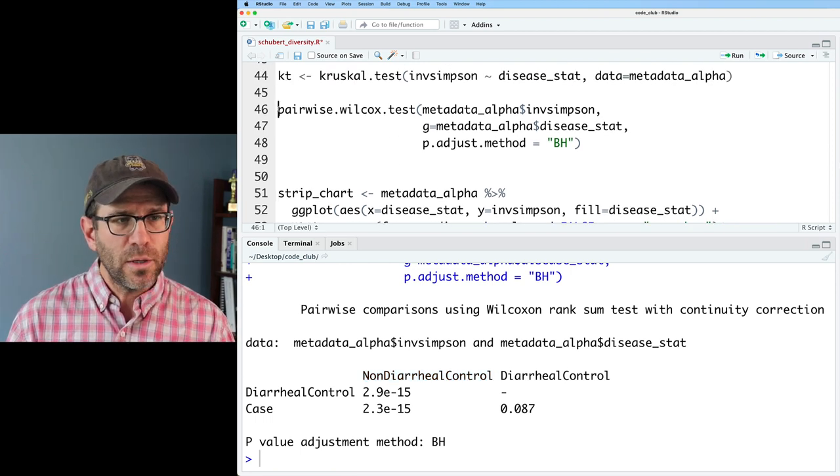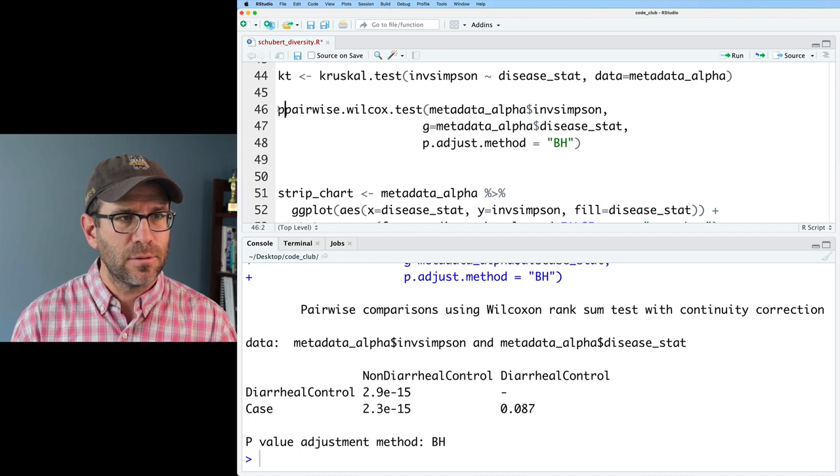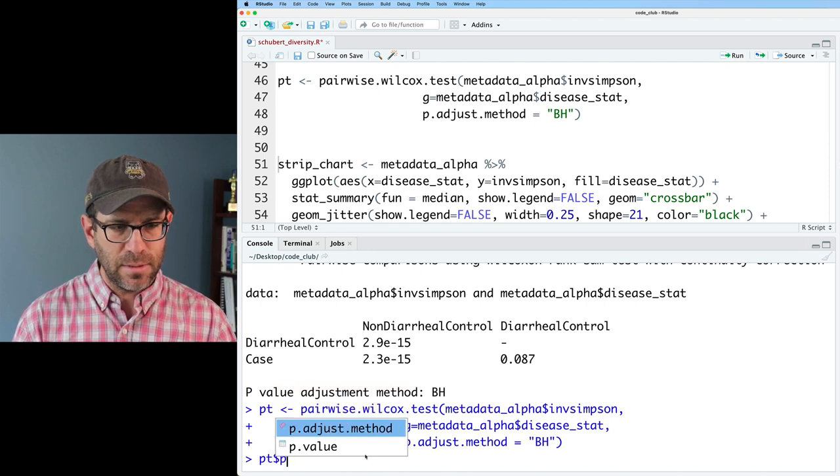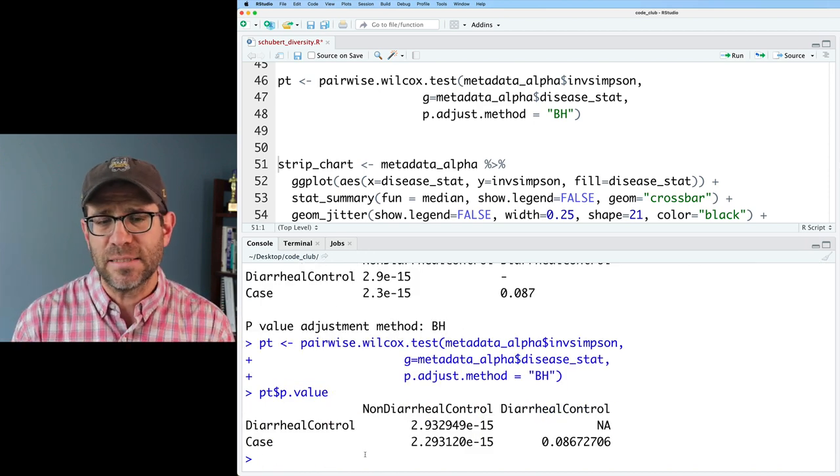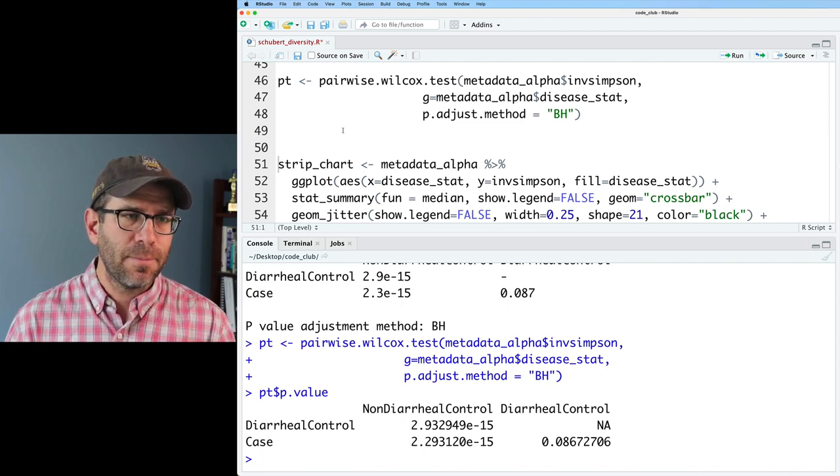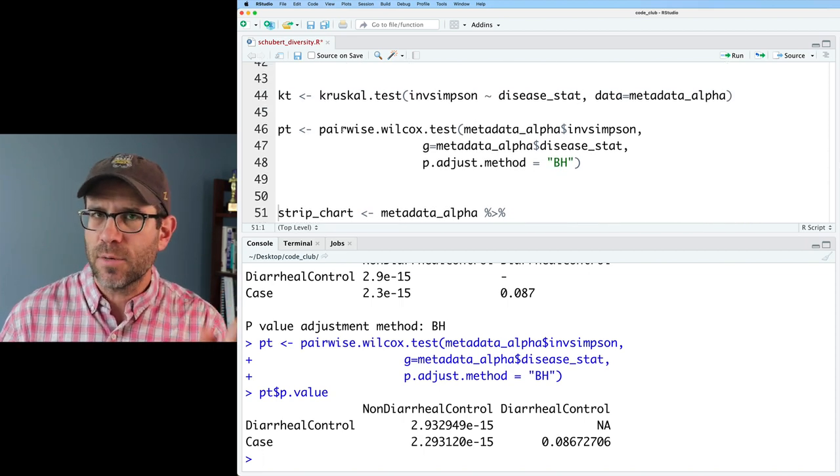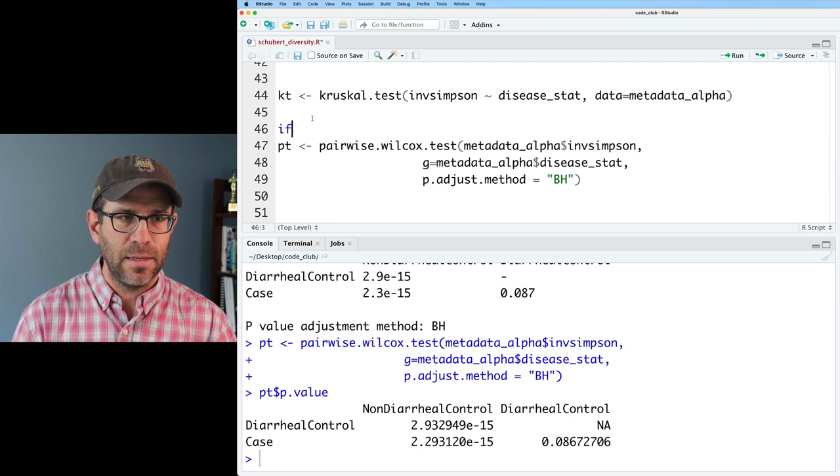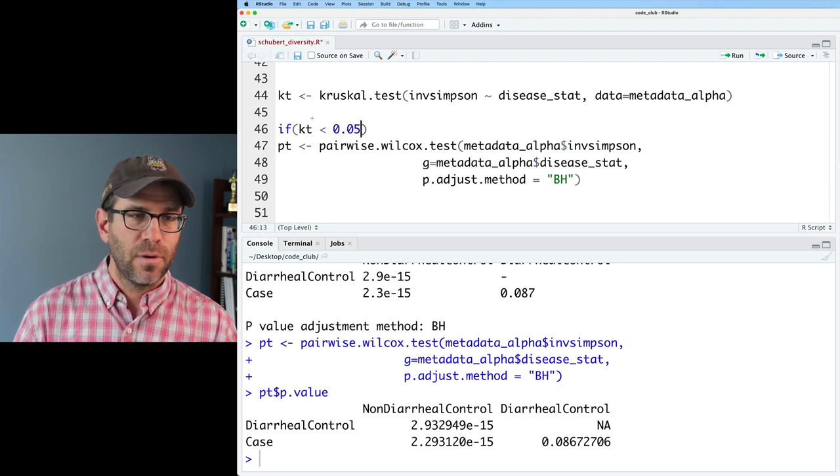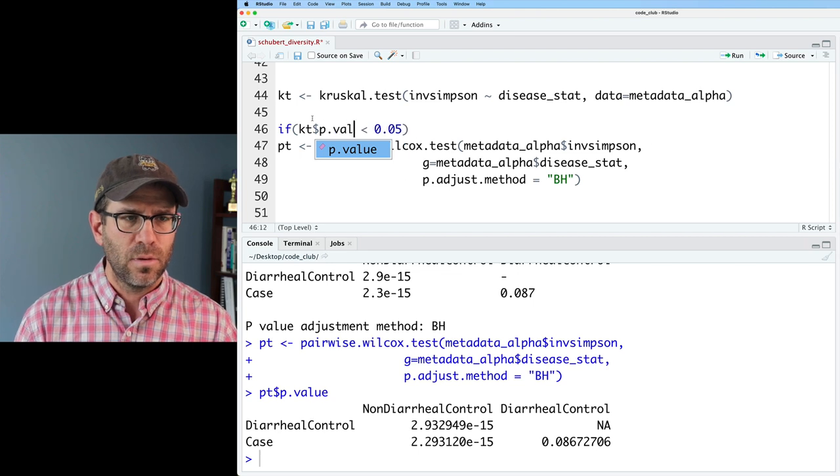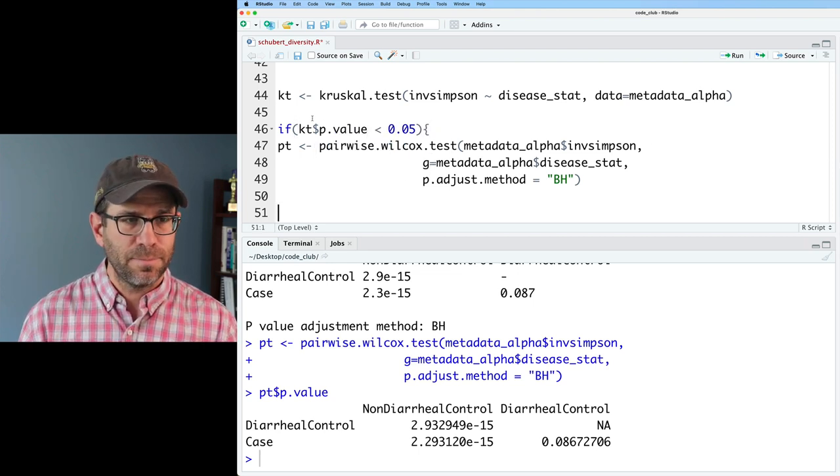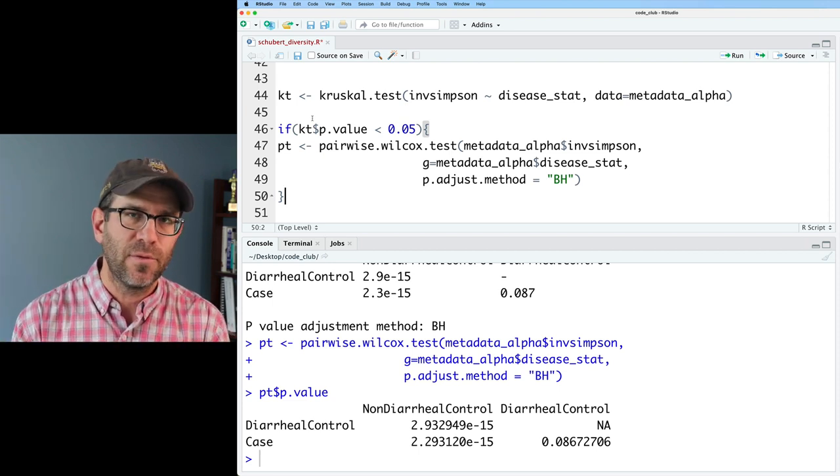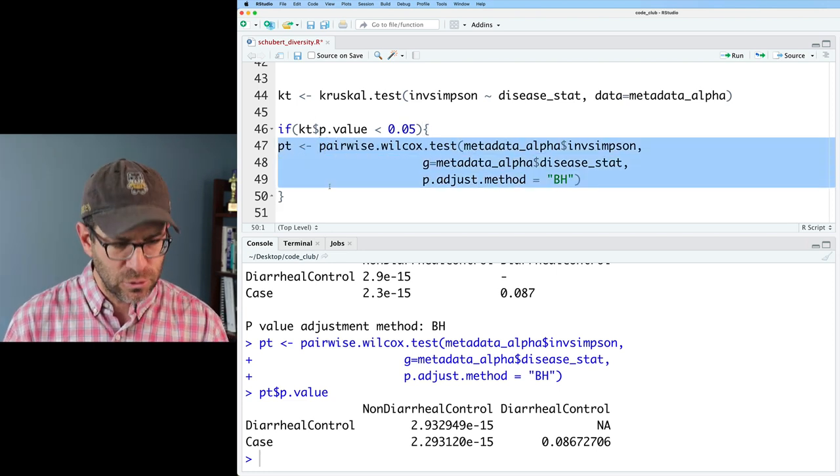We could save this as pairwise or pt, I'll call that pt, and we're good. And we could also get pt dollar sign p.value, and that comes out as a matrix if we wanted to play with that. What you could do if you're trying to make this automated and reproducible is to build in some logic here to say like, if kt dollar sign p.value is less than 0.05, then run this other test, right? And then if different values of the pt matrix from the p-values were significant, then you could do different things. I'm not going to go too far into the weeds there because I want to move on to thinking about how we can go about drawing those lines and stars on our figure.